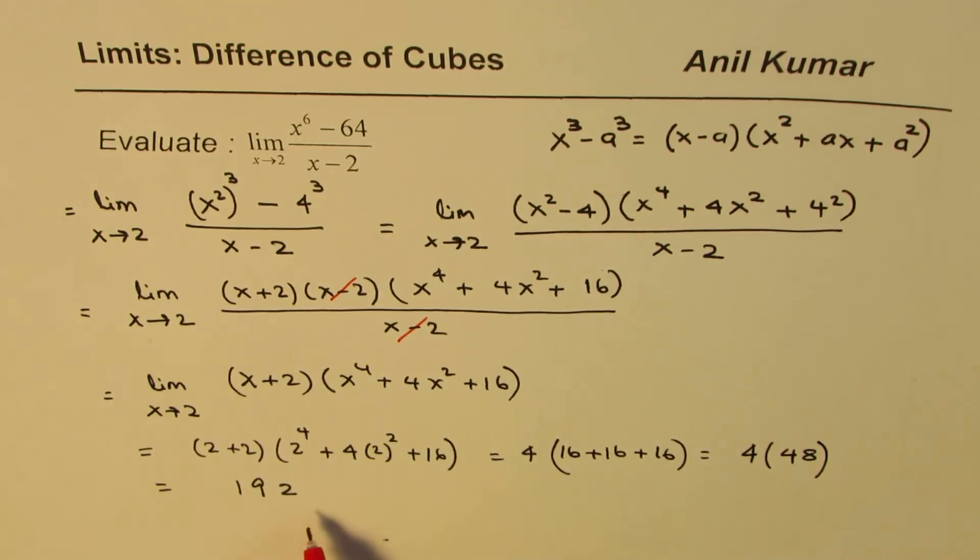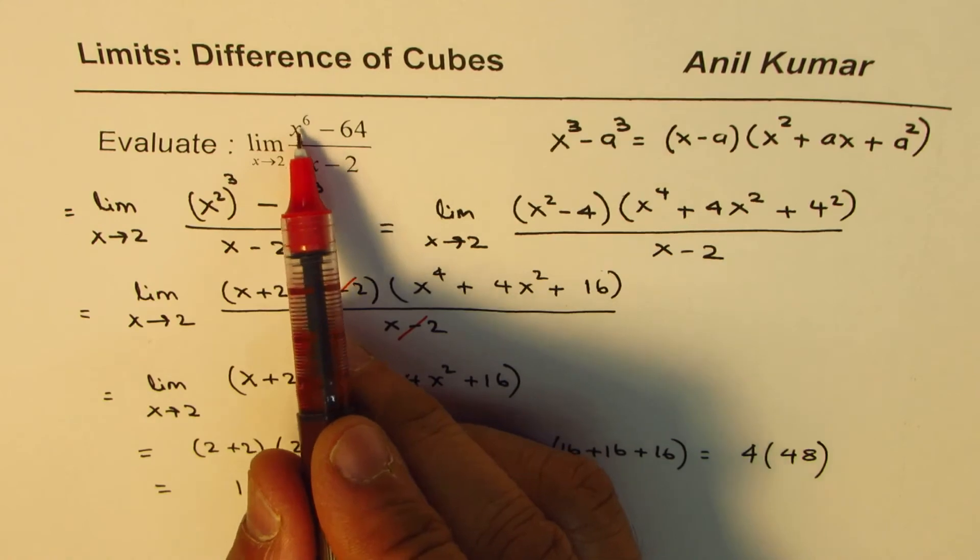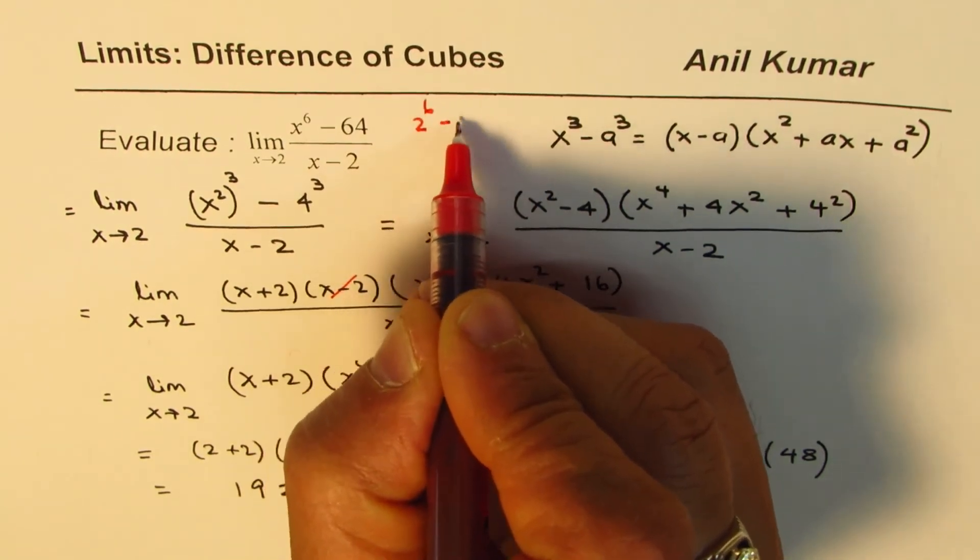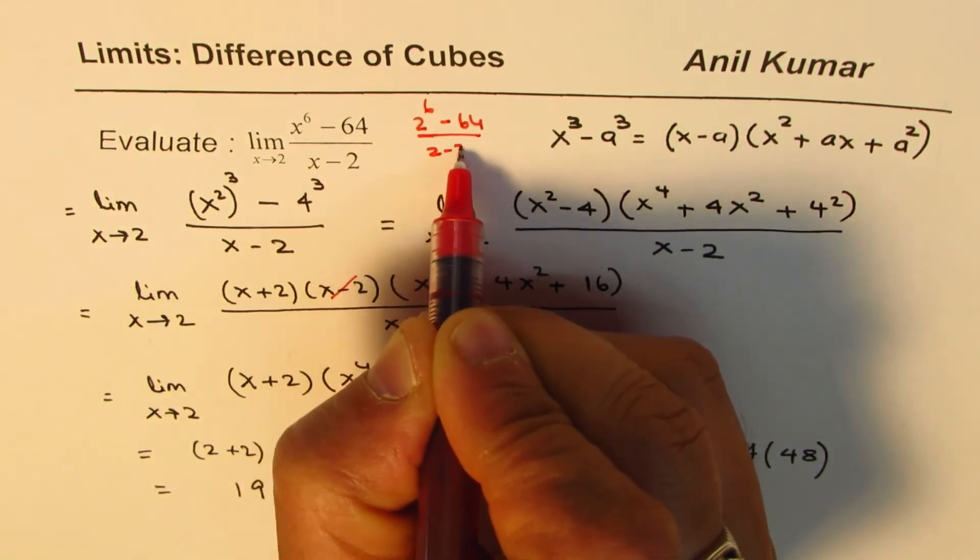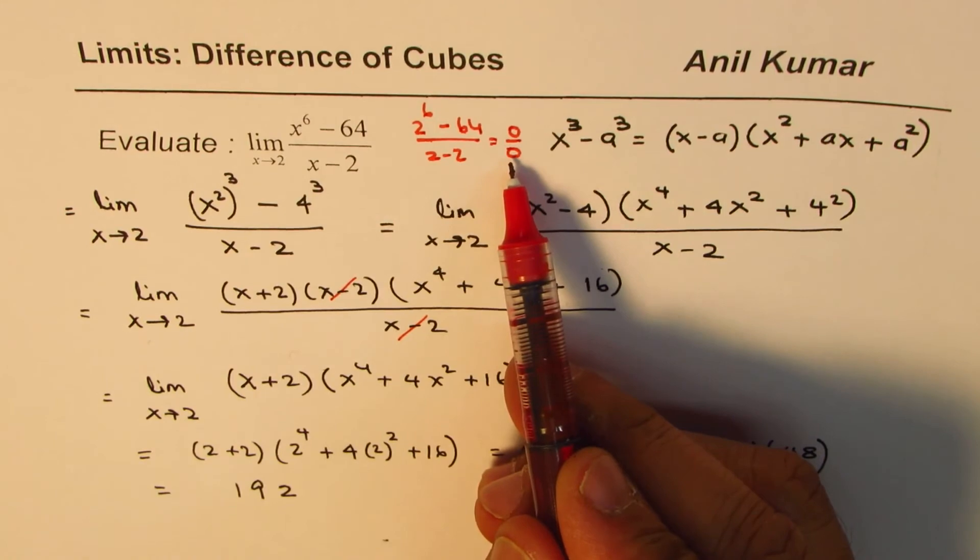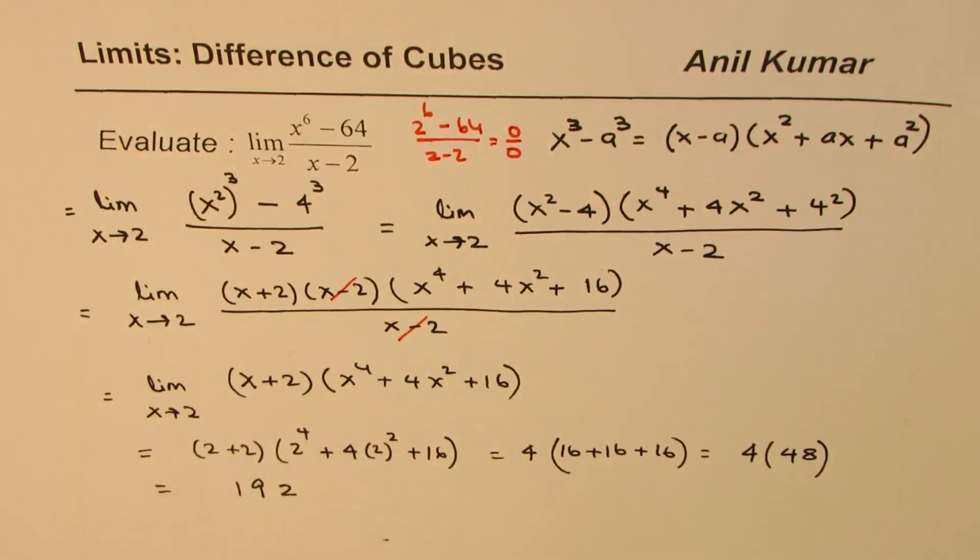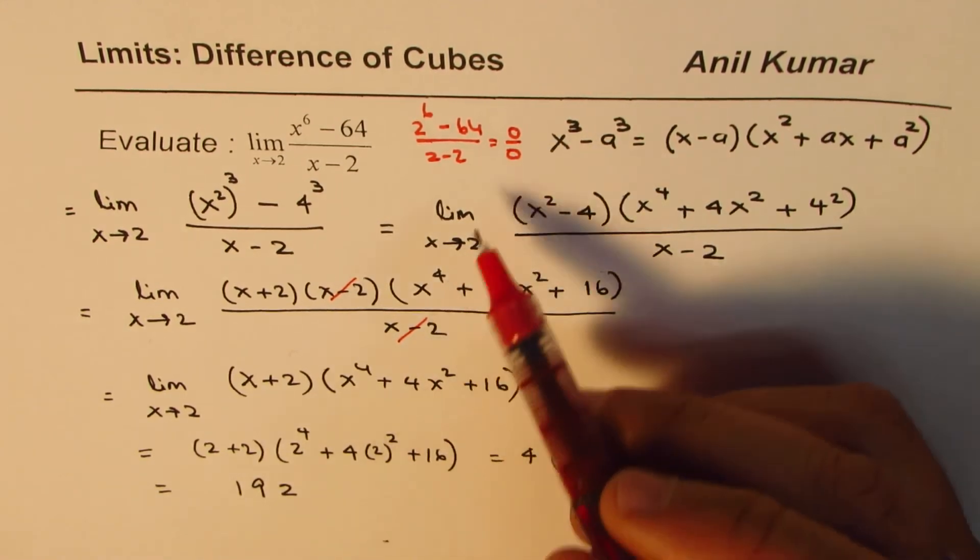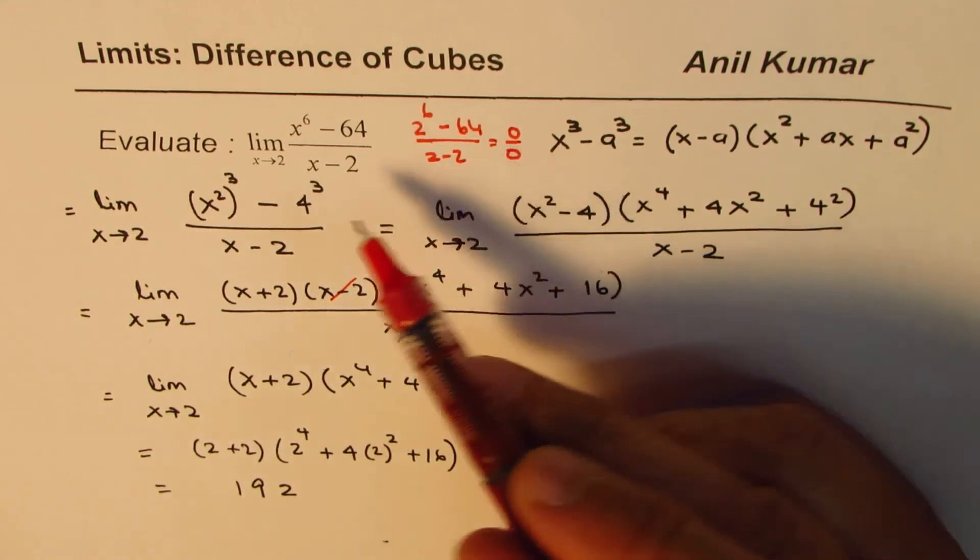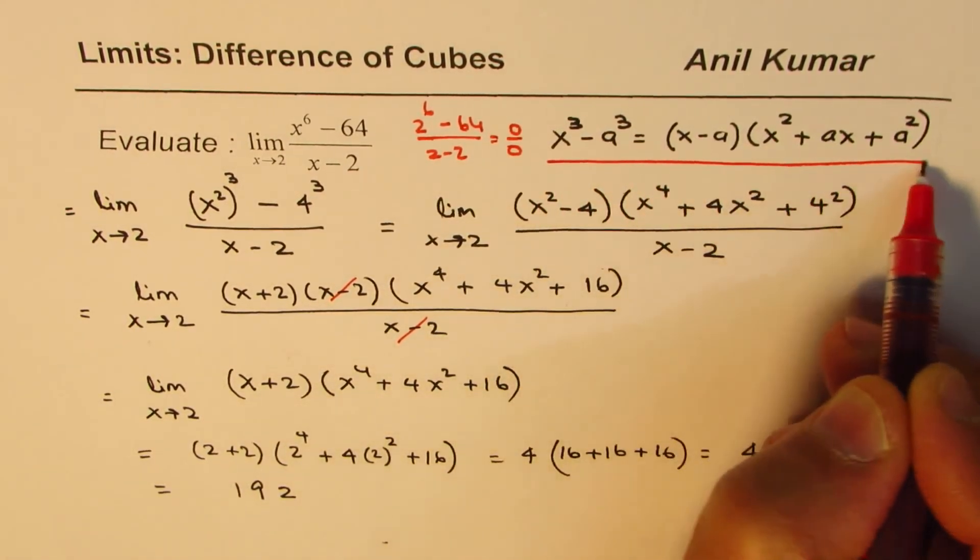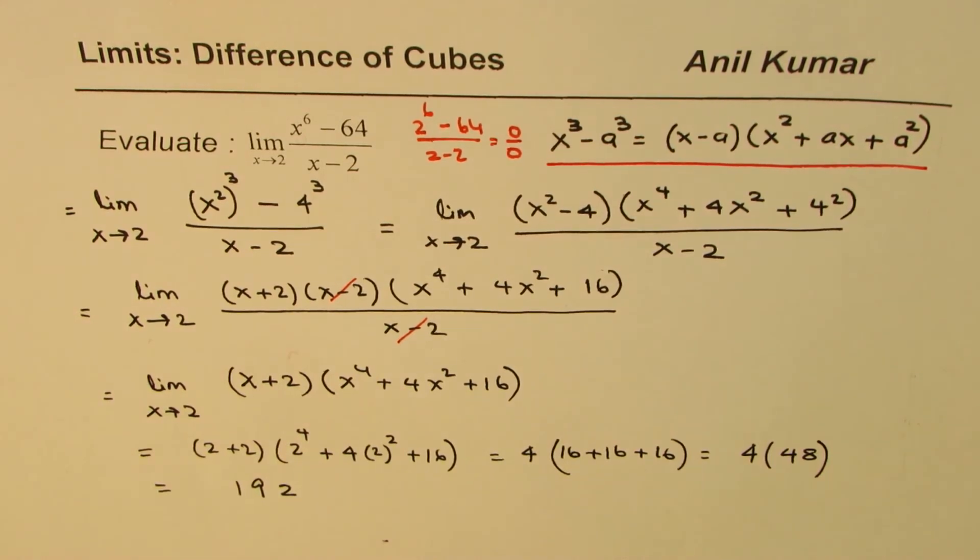To begin with, it is always a good idea to substitute 2 in the given expression. When you substitute 2 here, you get 2 to the power of 6 minus 64 over 2 minus 2, which is 0 over 0. Since it was an indeterminate form, you cannot really determine what the limit is. It could be 0, infinity, or a number as we got. In that case, we could use factoring as we did to solve the equation. In this particular example, we factored using the formula of difference of cubes. And then you can simplify and get the result.